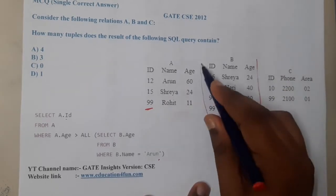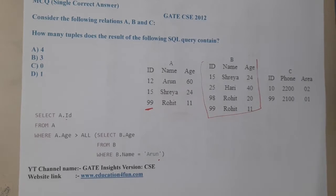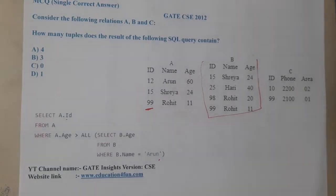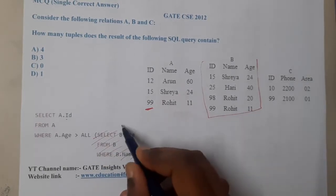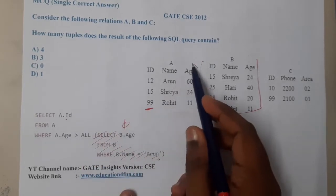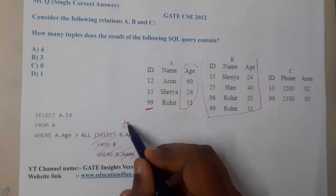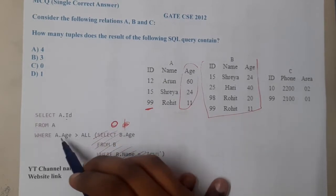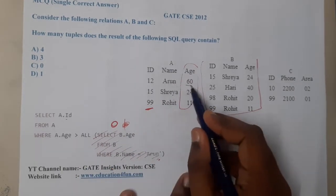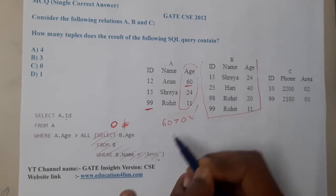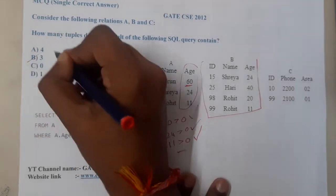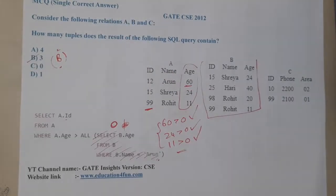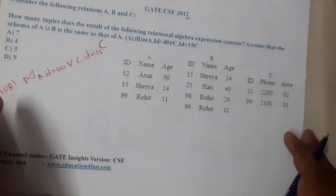There is no 'Arjun' in this particular table, so the subquery results in an empty set. When using greater than ALL on an empty set, it is effectively greater than nothing, so all entries qualify. Is 60 greater than 0? Yes. Is 24 greater than 0? Yes. Is 11 greater than 0? Yes. So the result has 3 entries — B is the correct answer for this SQL query.